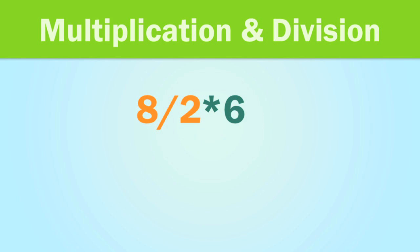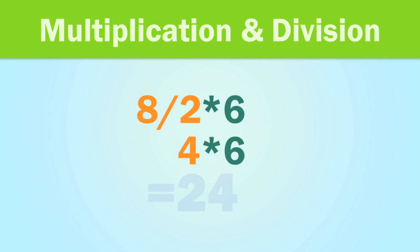Multiplication and division are considered to be at the same level, and that means if you have both of them in your formula, they're calculated from left to right. In this example, we'll do the division first and then the multiplication. If we wanted the multiplication to happen first, we could just put it in parentheses, or we could rearrange the formula so the multiplication was on the left.